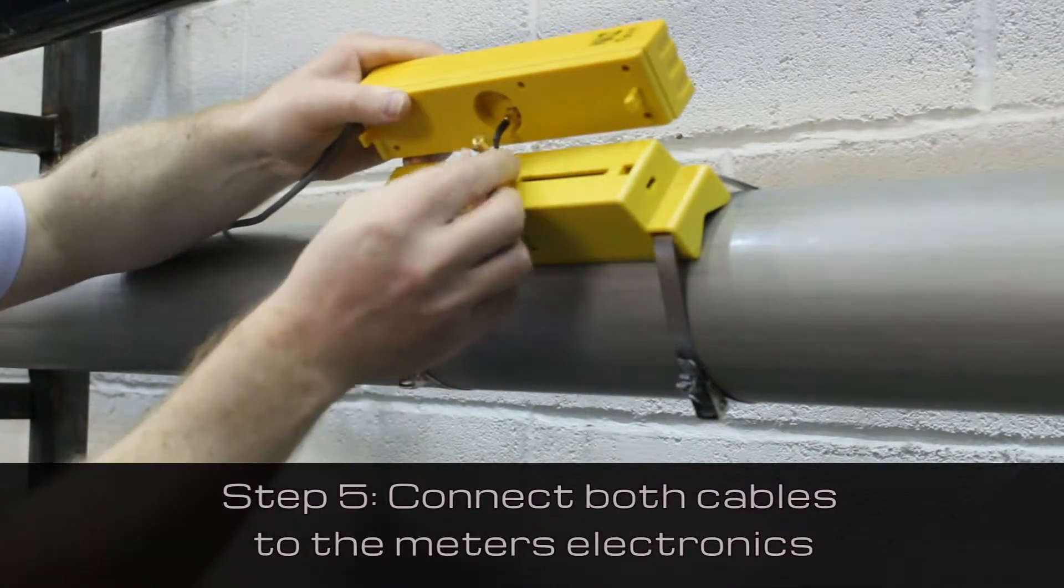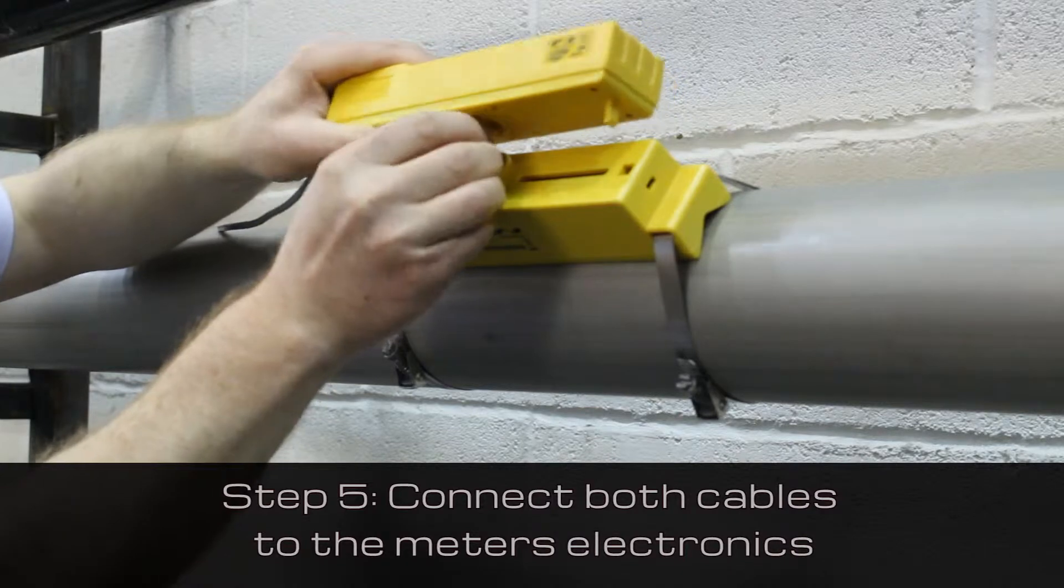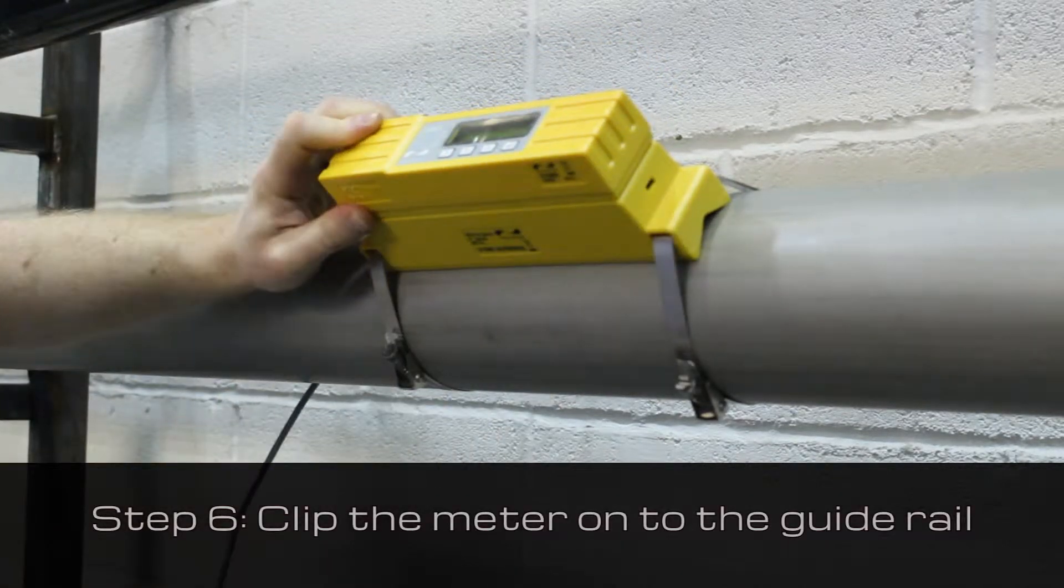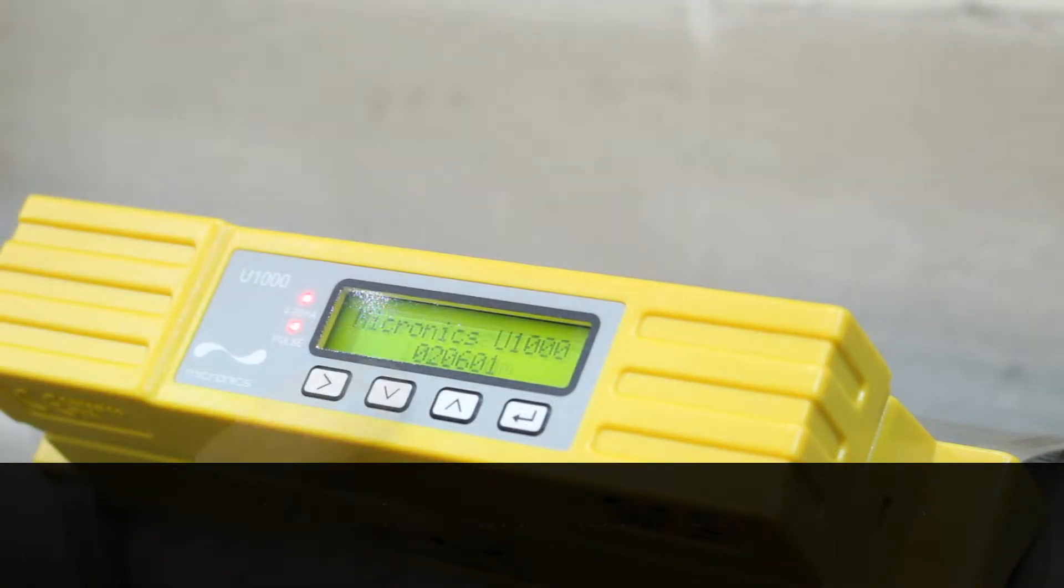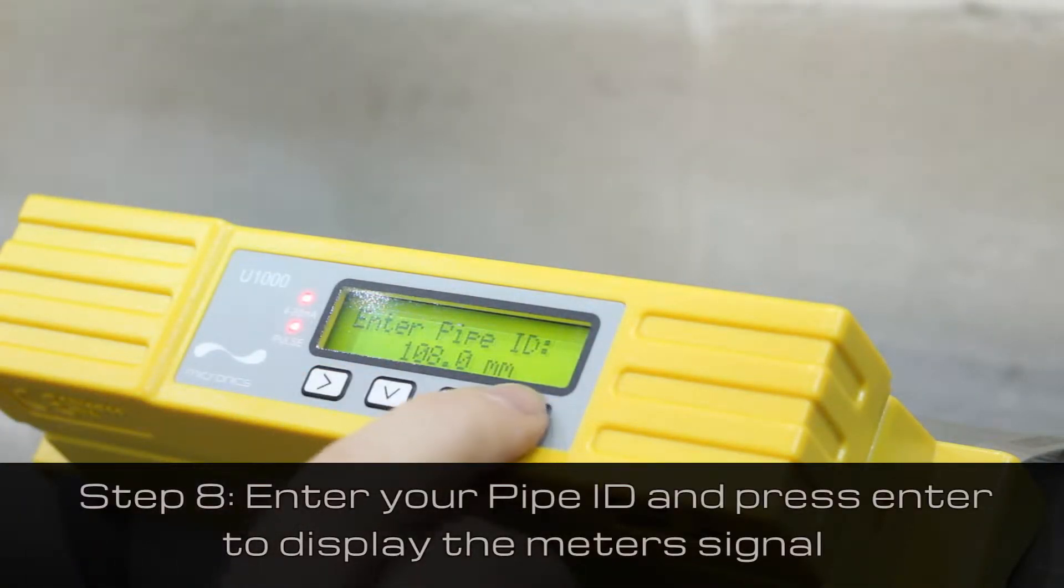The meter will simply clip onto the guide rail. Switch on the meter's power, then enter your pipe ID and press enter.